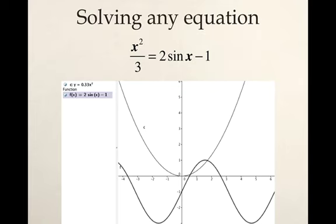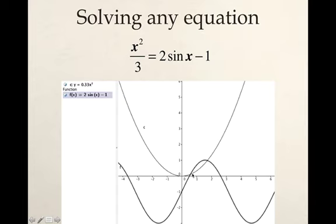A quick note: we can solve any equation where you have a function on either side of the equal sign simply by graphing y1 as one side and y2 as the other side. Where those two graphs intersect are the solutions for x. You can take this into your calculator, hit intersect, and find those points. With Wolfram Alpha you can just type the equation in as-is and it will do all that work for you.